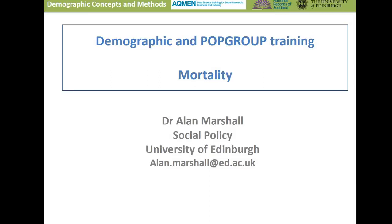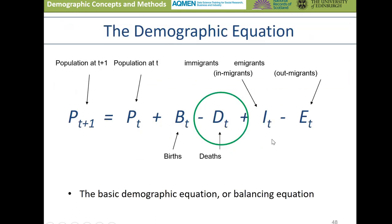In this video I'm going to move from measures of fertility or births to measures of mortality — looking at the second component of change within our demographic equation. How we can capture the number of deaths that occur within society in different population groups and within different places. We'll be looking at a number of different demographic measures that are used to capture mortality.